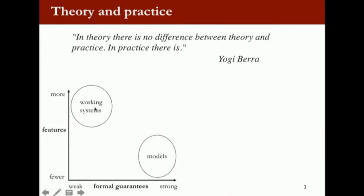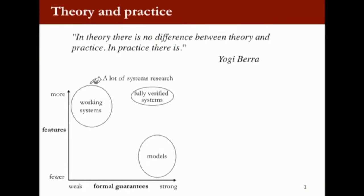In terms of abstract models, you tend to have a lot of formal properties because you can analyze them a lot, but they tend to have fewer features because that makes them easier to analyze. Ideally, what we want is up here in this small bubble — a fully verified system that actually works, has all the functionality and features you want, but also has really strong guarantees. In terms of research, systems research tends to be in one bubble — real working systems with lots of features but weaker security guarantees. Theory research tends to build models and abstractions, prove properties, but throws away a lot of features.